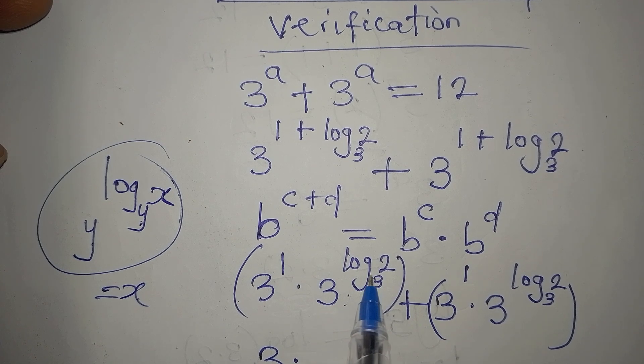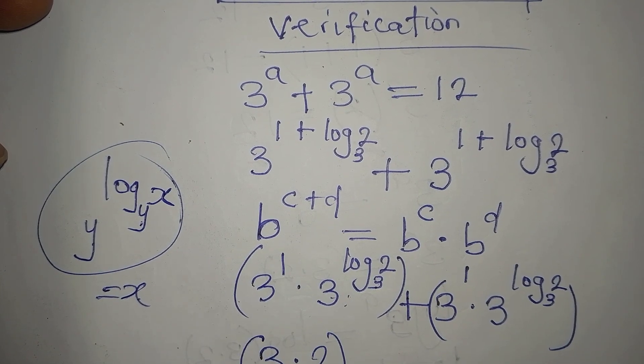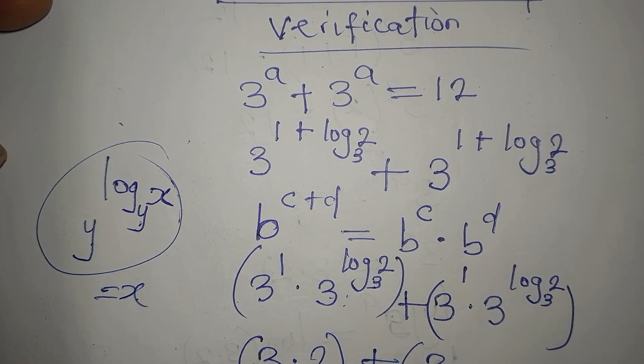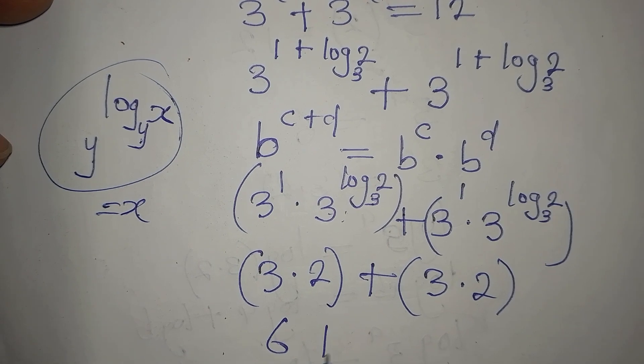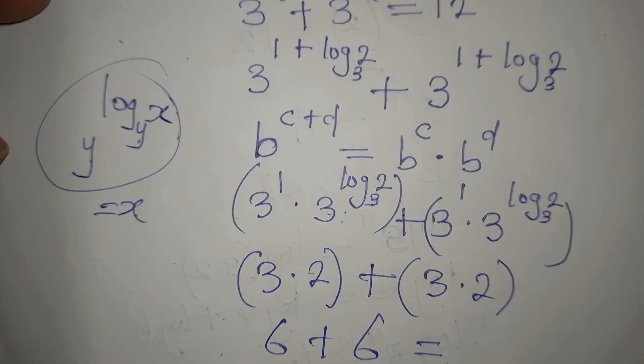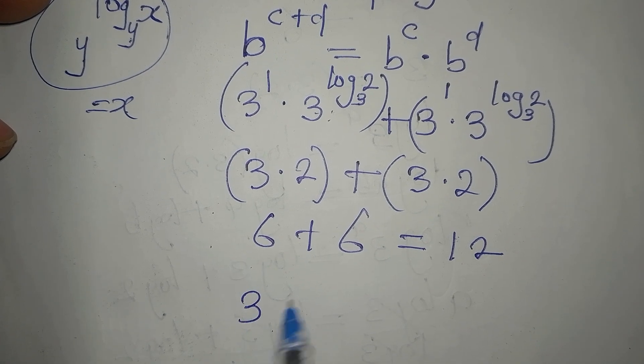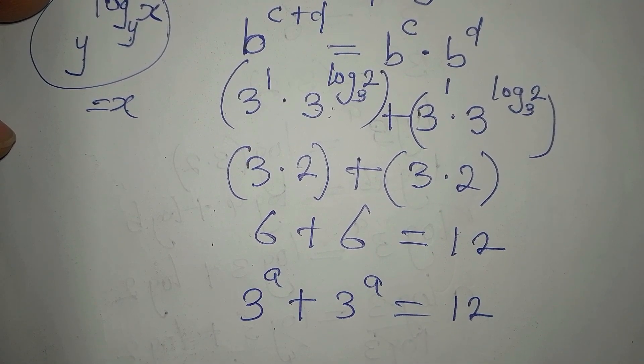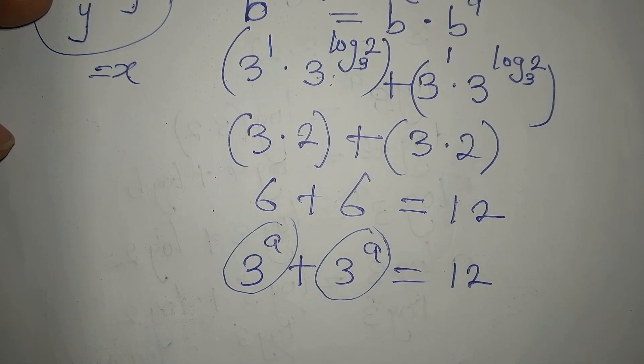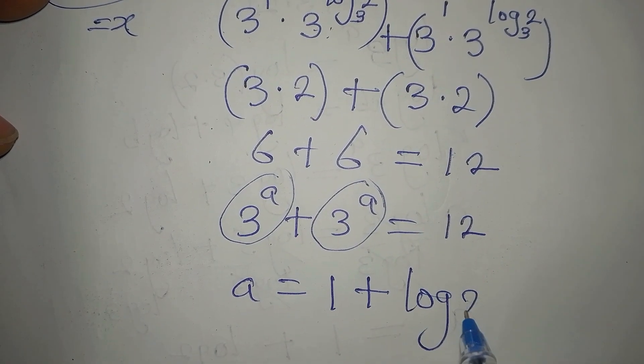So 3 is to the power of log 2 to base 3. The same number here. So 2 will be here. Plus the same thing will happen. They will have 3 times 2 again. Right? So 3 times 2 is 6. Plus 3 times 2 again, 6. And if you add these 2, you're having 12. And if you want to remember, if you can recall, we have 3 to the power of a plus 3 to the power of a equals 12. Can you see that? So this means that we are very correct. Because this right here now is 6. And this again is 6. So we are correct to say that our a is equal to 1 plus log 2 to the base of 3.